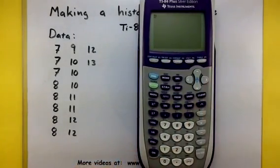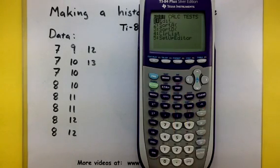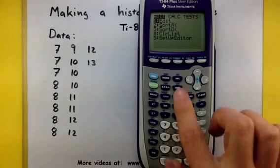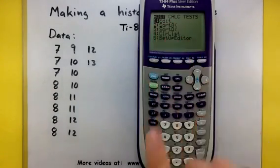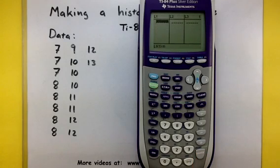The first thing we want to do is get all of this data into the calculator. To do this, start by pressing your STAT button. You should have the first thing selected, which says EDIT, and go ahead and press ENTER. Here's where we want to enter in all of this data.